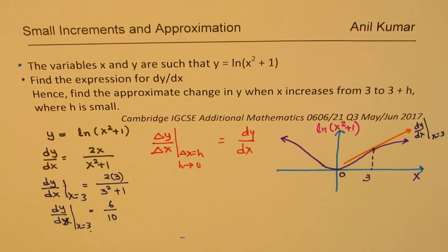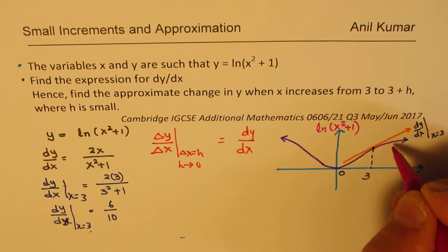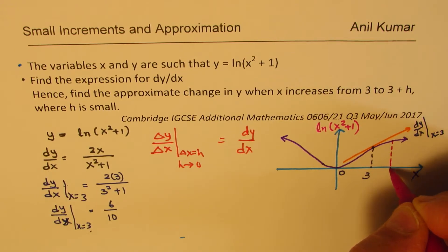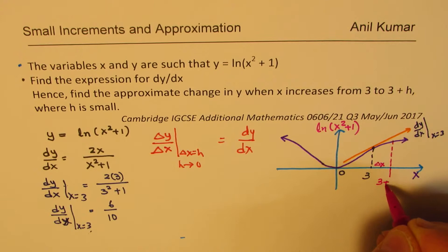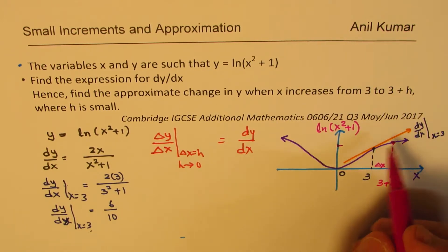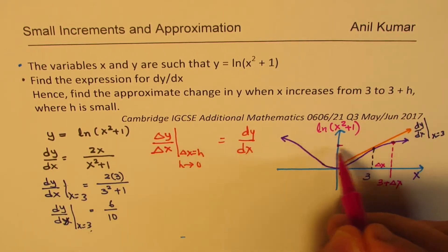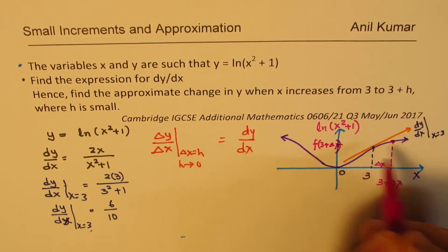On the graph, what are we trying to figure out? We're trying to figure out that if I take a point - I'll take further away just to show you the difference - let's say we take a point here which is delta x away. That means this point is 3 + delta x.